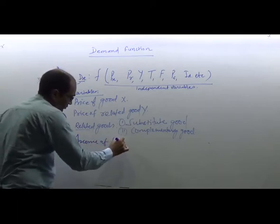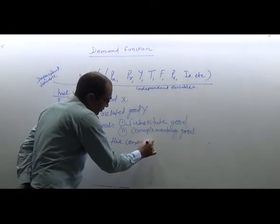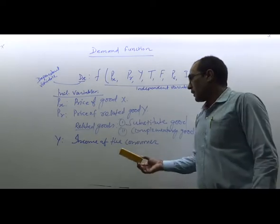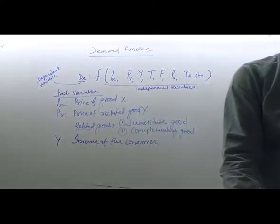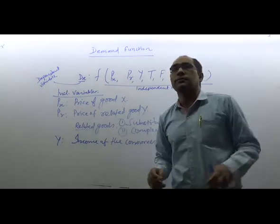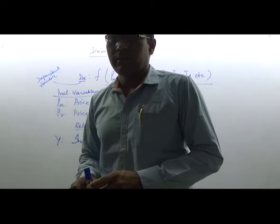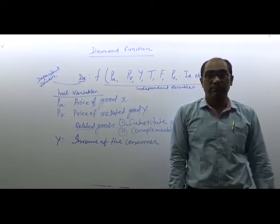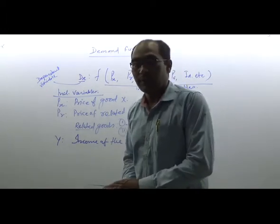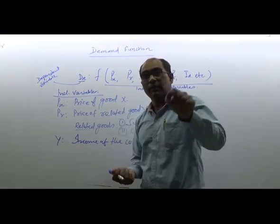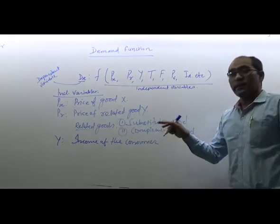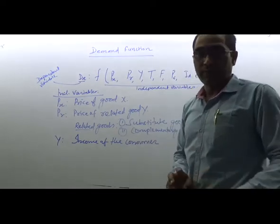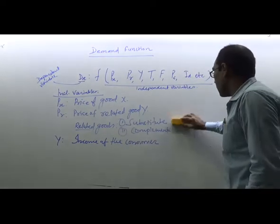Next is income of the consumers. Demand for any goods is affected by income of the consumers — nobody can reject it. But to explain the impact of income, we have to categorize our product into two types: normal and inferior. There are different applications of income on different types of goods.